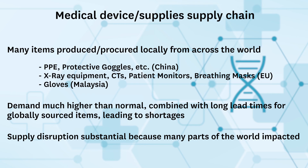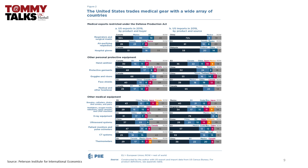Now, let's look at the healthcare supply chain. As we noticed in this pandemic, we were desperate for ventilators, masks, etc. Many of these items are sourced both locally and globally. In fact, the U.S. both exports and imports many of these items — masks, gloves, ventilators, etc. — as the accompanying chart shows. Some of them are sourced locally, like ventilators, but there was still fear of shortages.